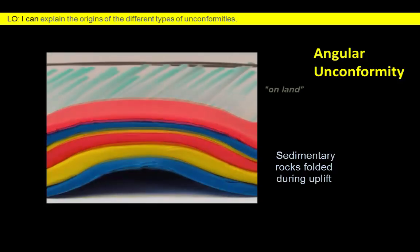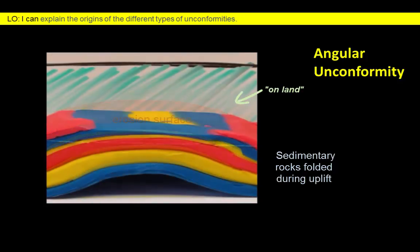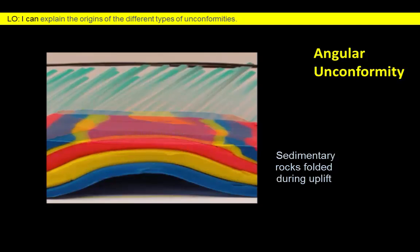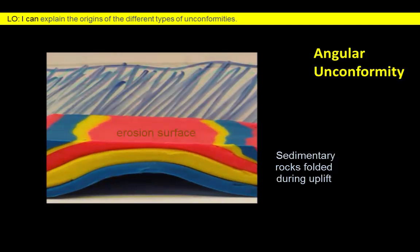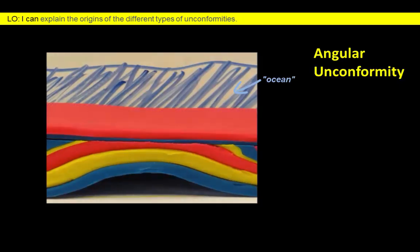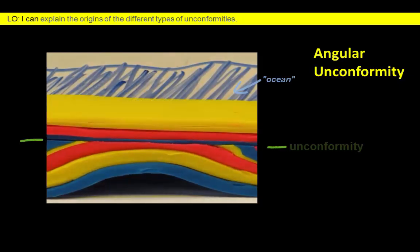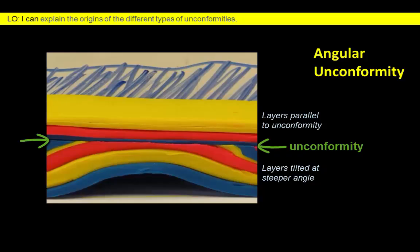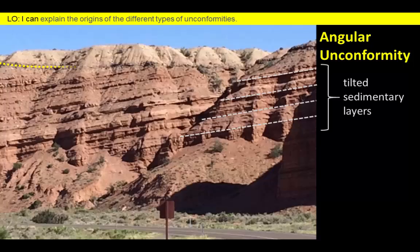Now that these rocks are exposed at the surface, the uppermost layers would be removed by erosion. If these rocks are now resubmerged, new horizontal layers will be deposited on top of the erosion surface. The rocks above and below the unconformity have different orientations, and this surface between the folded lower layers and the horizontal upper layers represents an angular unconformity. In this example from Utah, the angular unconformity places a tan-colored layer of sedimentary rock on top of tilted red-colored rocks.